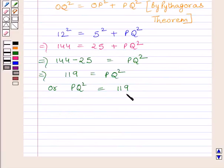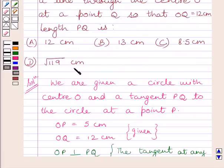Now, taking square root on both sides, we get PQ is equal to square root of 119. So, we can write PQ is equal to square root of 119 cm. So, the correct answer is D.